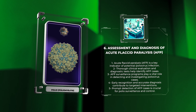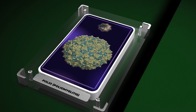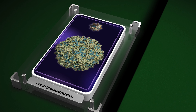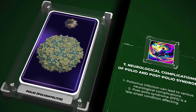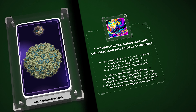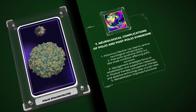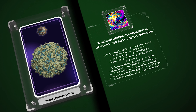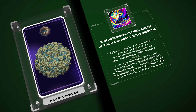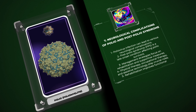Let's now discuss the neurological complications of polio and post-polio syndrome. Poliovirus infection can lead to various neurological complications, some of which can manifest long after the initial infection. These complications include muscle weakness, muscle atrophy, joint contractures, and skeletal deformities. Post-polio syndrome, PPS, is a late-onset condition that affects individuals who have previously recovered from acute poliovirus infection, typically presenting years or even decades after the initial infection. Its symptoms include new muscle weakness, muscle fatigue, joint and muscle pain, and decreased endurance.